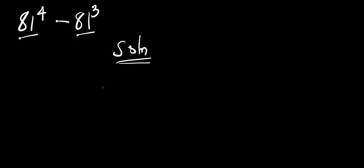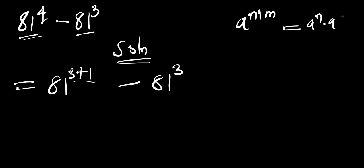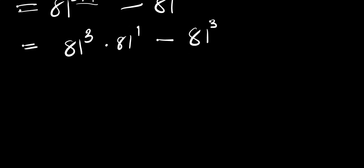We have 81 to the power 4, which we can write as 81 to the power (3+1), since 3+1 equals 4. Then we apply the identity: a^(n+m) = a^n × a^m. So 81^4 becomes 81^3 × 81^1, and we still have minus 81^3.